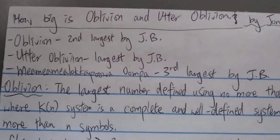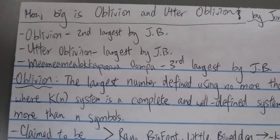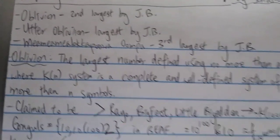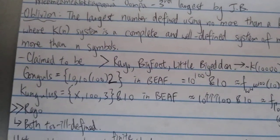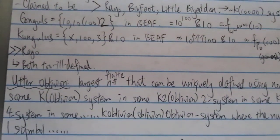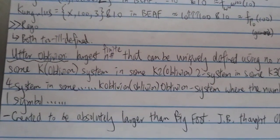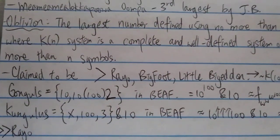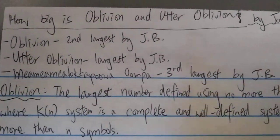So anyway, this is oblivion and utter oblivion. I mean both are ill-defined, but even if it's well-defined it's still not the biggest number ever created, I believe, which is something called the Gardens number. But anyway, thanks for watching and have a nice day.